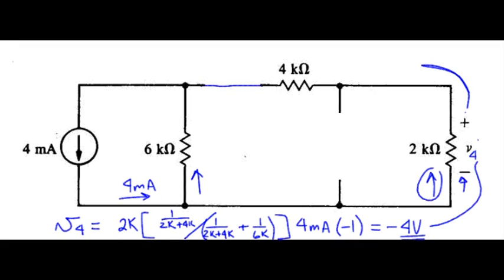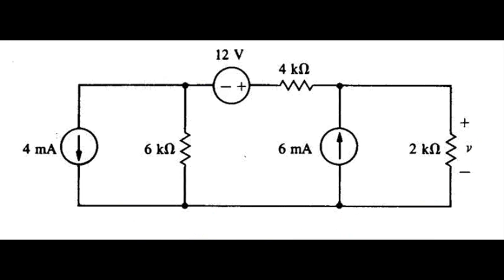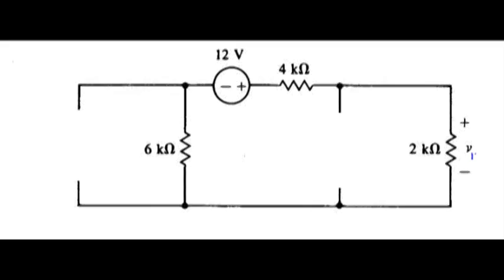So we'll save that result away. I'm going to bring the original circuit back up next. I'll continue by setting the 12 volt source active, so we set that to zero, set this to zero—that means we replace both of those by open circuits. So now we have the voltage due to the 12 volt source acting alone.